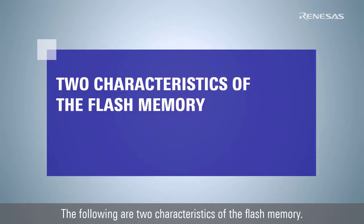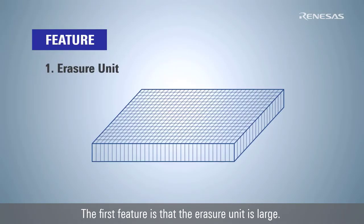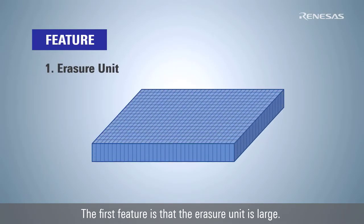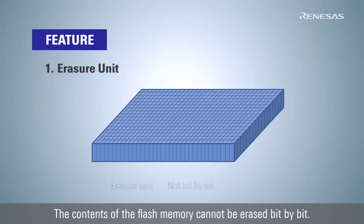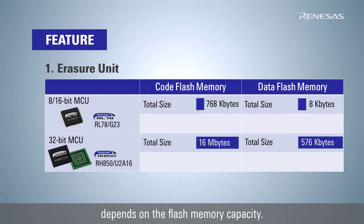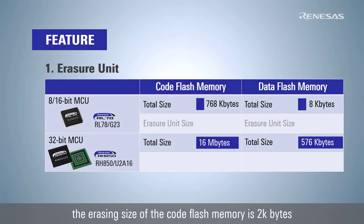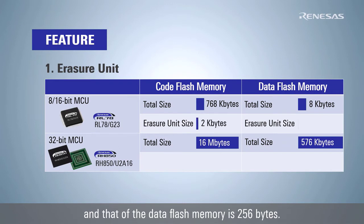The following are two characteristics of the flash memory. The first feature is that the erasure unit is large. The contents of the flash memory cannot be erased bit by bit; the size that the flash memory can erase in a single process depends on the flash memory capacity. For a small capacity product like RL78G23, the erasing size of the code flash memory is 2 kilobytes and that of the data flash memory is 256 bytes.